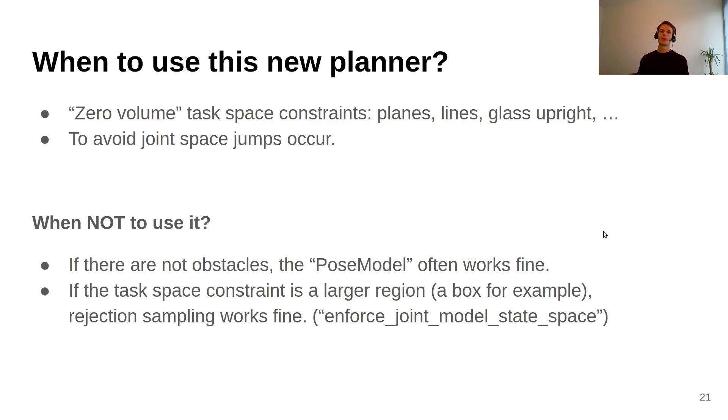So when should you use this new planner? As mentioned in the presentation, it should be clear that for zero volume task space constraints - this is planes, lines, also the glass upright constraints, or carrying containers with water or something - these fall in this category. And then if you have any problem where you have the joint space jumps, it's always worth trying the other planners in MoveIt and especially the new planner with OMPL.